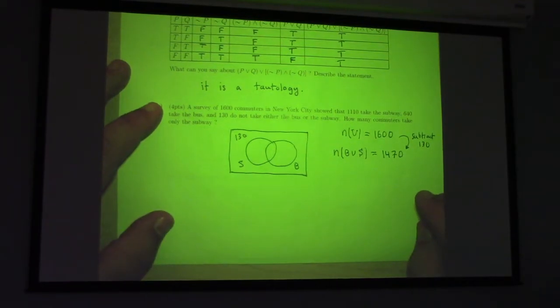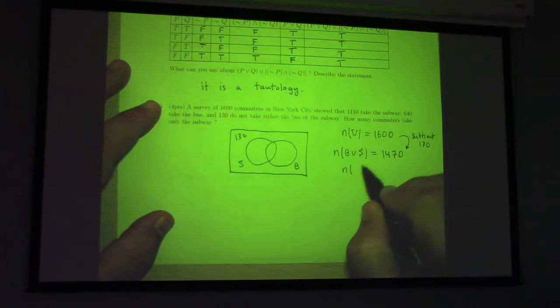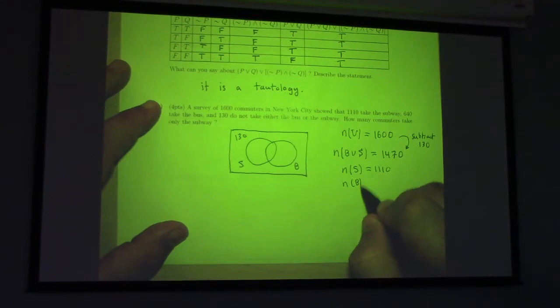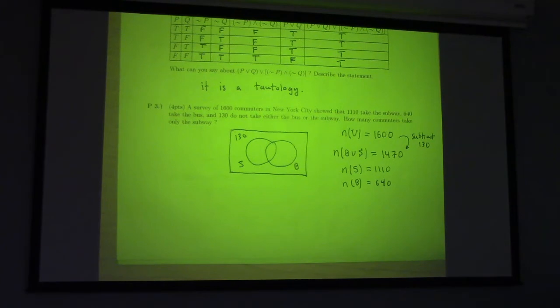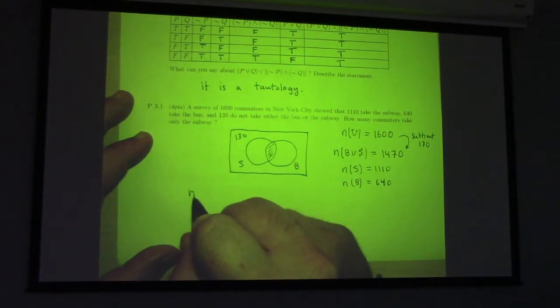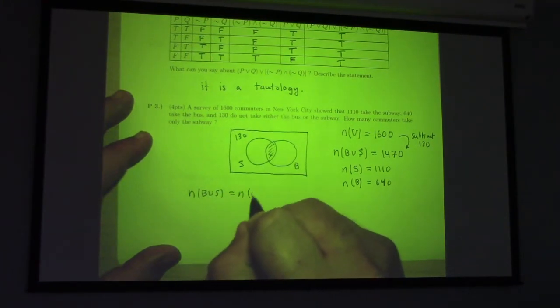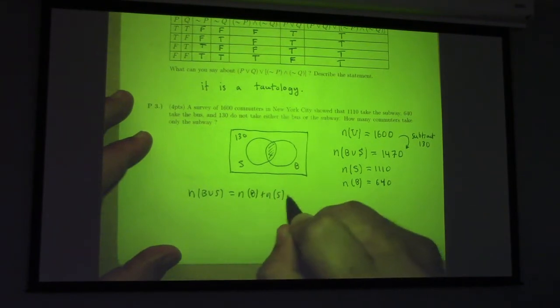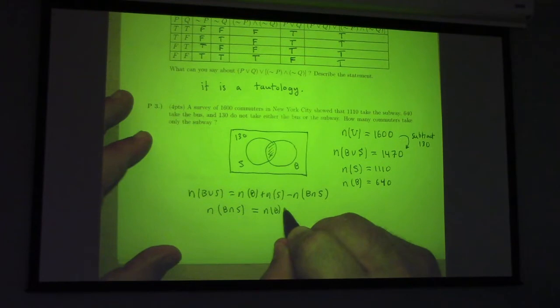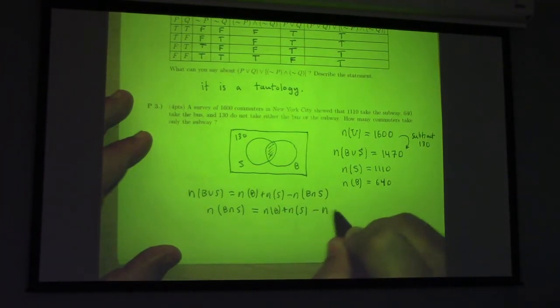So, what's the number in the bus union the subway? 1,470. So, how did you get that number? I subtract the main number from 130. Yeah, exactly. To subtract 130, right? We have the number in the subway is 1,110. The number in the bus is 640. So, how should we figure out the question? We're asked, how many commuters take only the subway? So, we need to figure out the number in here.